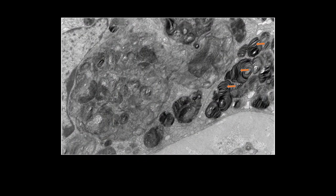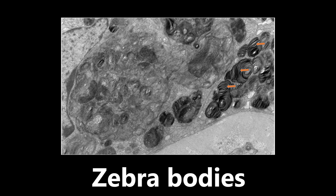Next image here, we have an arrow sign pointing at some structures — what it's pointing at is zebra bodies. These zebra bodies are basically intralysosomal inclusion bodies, so they're inclusion bodies within the lysosome that are specifically seen within the kidney, and we're seeing some on electron microscopy here. This is seen in Fabry disease. If you see something like this — it kind of looks like the stripes on a zebra — you want to be thinking zebra bodies and Fabry disease.